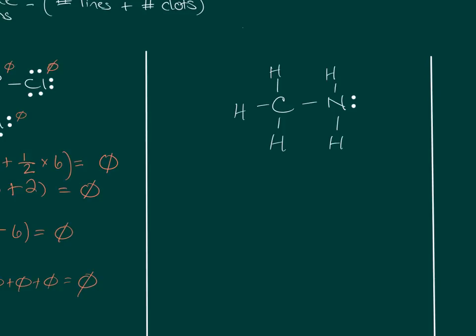Moving to the next example, let's start with the formal charge on the hydrogens since that's simple. Hydrogen has one valence electron, minus one line plus zero dots (no lone pairs), so the formal charge is zero. We don't need to recalculate for each hydrogen — every hydrogen looks the same regardless of whether it's bonded to carbon or nitrogen. So we can fill in zero on all hydrogens.